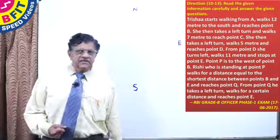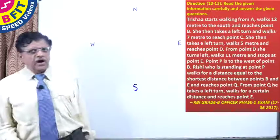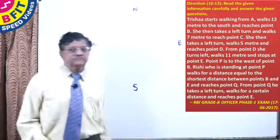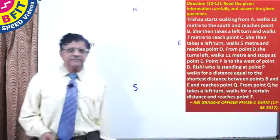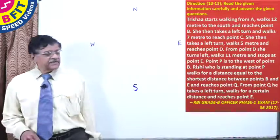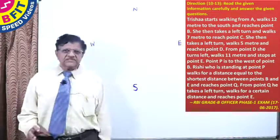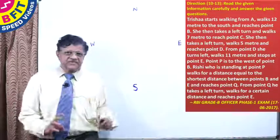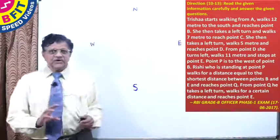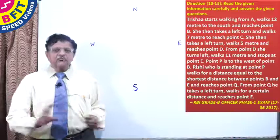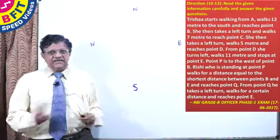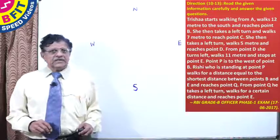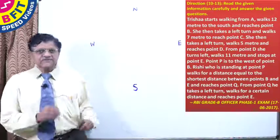The next question is from the RBI Grade B officer's exam. RBI Grade B exam is one of the toughest examinations. Here we have four questions which are telescoped one upon each other, so we have to solve all four and each is dependent on the other. Let us see the question.